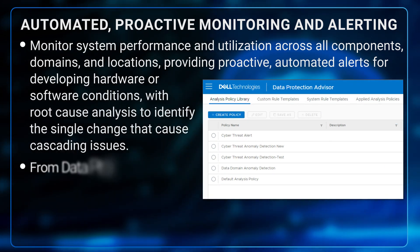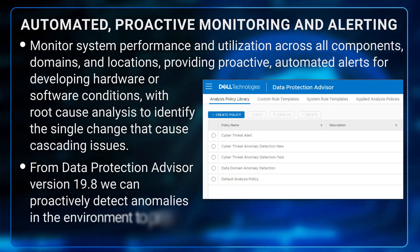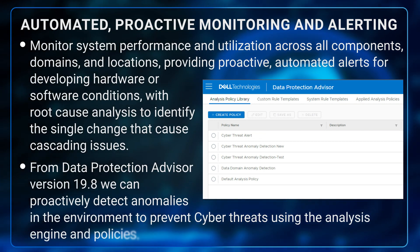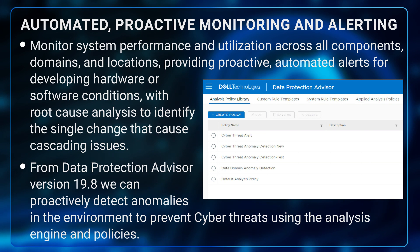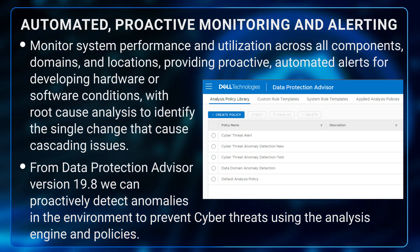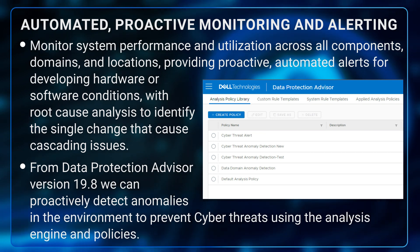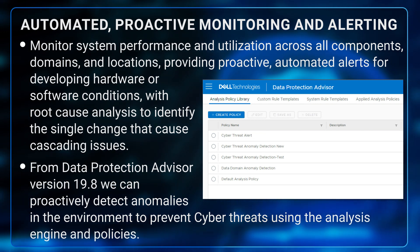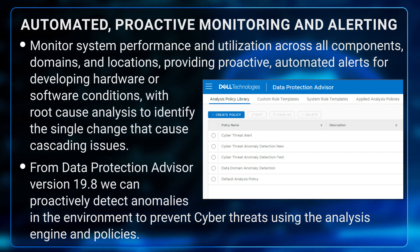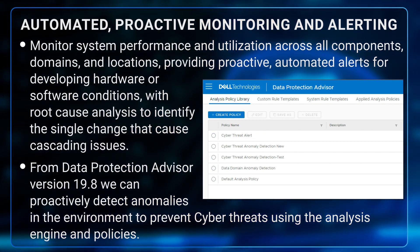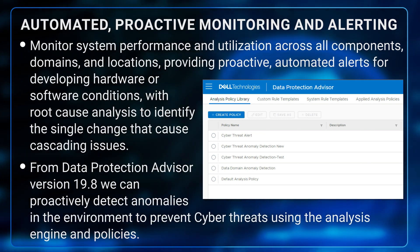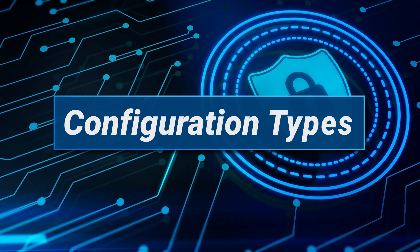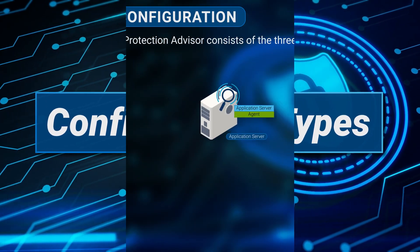The proactive analysis engine constantly monitors incoming data against a variety of rules, looking for failures, threshold exceptions, and developing conditions. The analysis engine can look for failures on critical hosts, repeated backup failures, growth of a backup that will exceed the backup window, missed SLAs, and resource utilization thresholds. It can also monitor application environments for gaps in policy or configuration that will cause a recovery to fail. You can use or customize the standard rule set, and starting with version 19.8, DPA can proactively detect cyber threat anomalies in your environment.